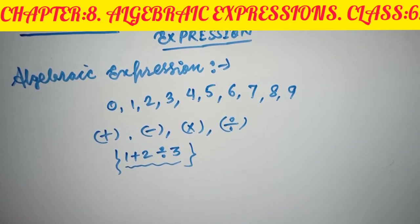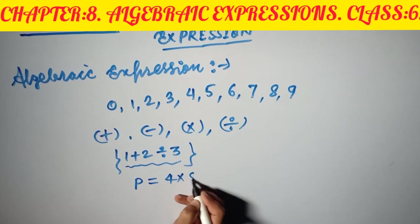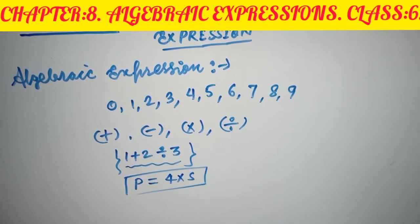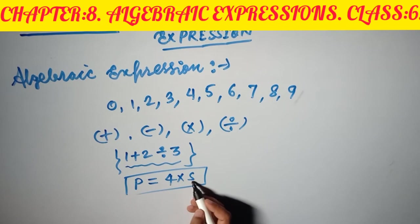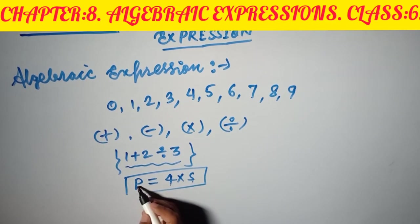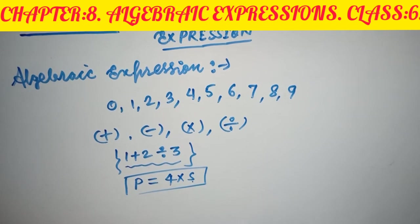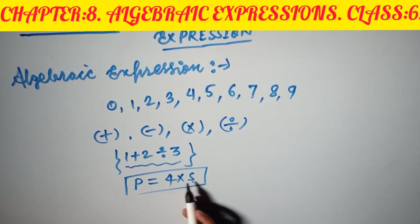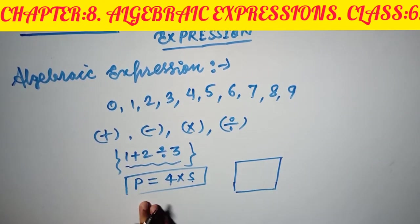Sometimes if we write P equals 4 times S, this is also written in algebraic form because one operation is used with a particular number and a general letter. I am talking about the perimeter of a square — P for perimeter and S for side of any square. The perimeter of a square is always P equals 4 times S, regardless of the size of the side.